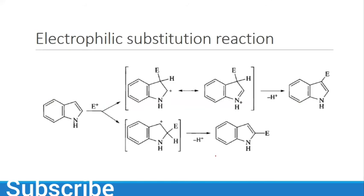For electrophilic substitution reactions, if the electrophile attacks at position number 3 - counting nitrogen as 1, then 2, then 3 - we have two resonance structures. But if we attack at position number 2, we have only one resonance structure. That's why indole gives electrophilic substitution reaction at position number 3 because it has two resonance structures.